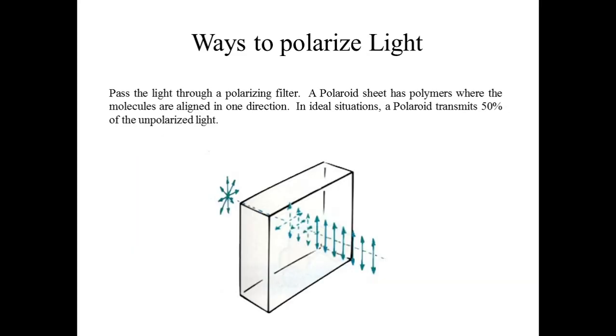How can we do that? We can do this by passing the light through a polarizing filter. A polaroid sheet has polymers where the molecules are aligned in one direction. In an ideal situation, the polaroid transmits 50% of unpolarized light.